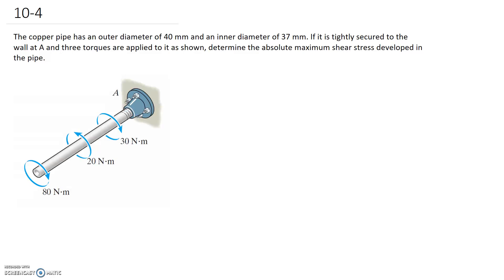In this question we have a copper pipe with an outer diameter of 40 millimeters and an inner diameter of 37 millimeters, and it's tightly secured to the wall at A. We also have three torques applied to it and we need to determine the absolute maximum shear stress developed in this pipe.